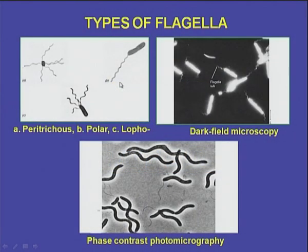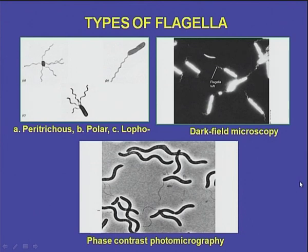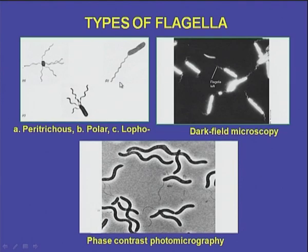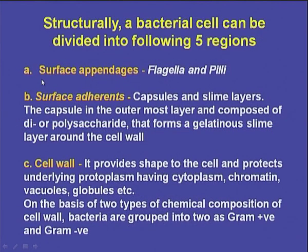Here I am showing the types of flagella as seen under the microscope. To see bacterial cells we need specific microscopic arrangements. Under dark field microscopy we can find this type of bacteria, and under phase contrast photomicrography the bacterial cell appears like this. Here we can see peritrichous, polar, and lophotrichous types of bacterial cells. Structurally, a bacterial cell can be divided into five regions: surface appendages (flagella and pili), surface adherence capsules and slime layers, cell wall, cytoplasm, and organelles.